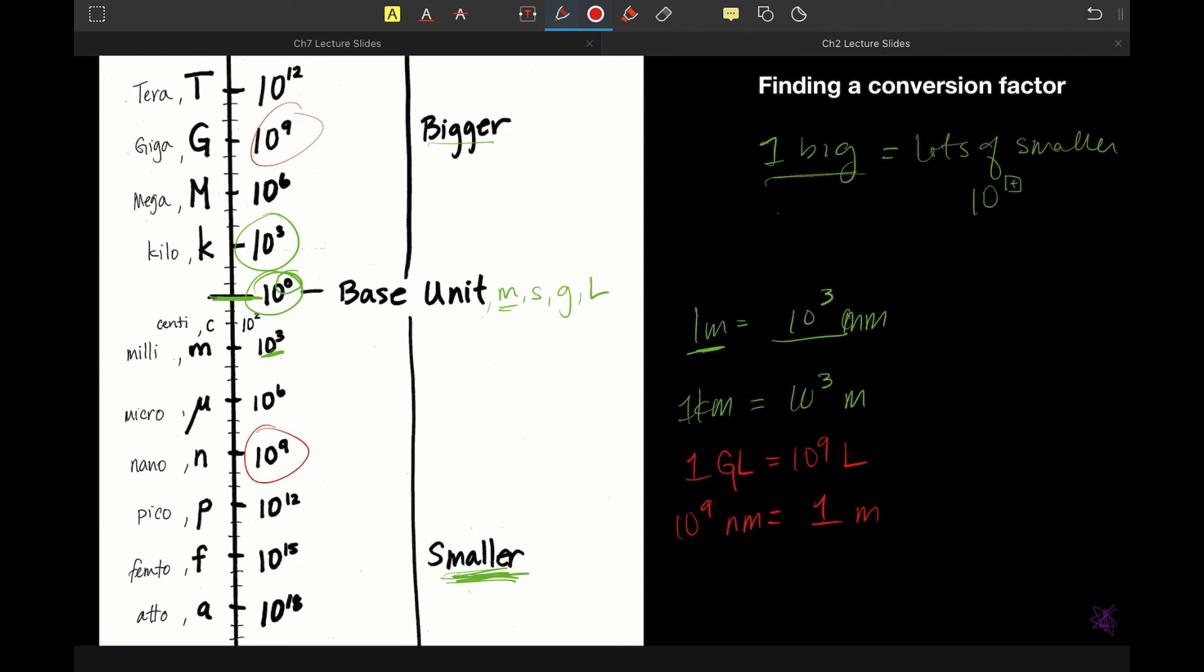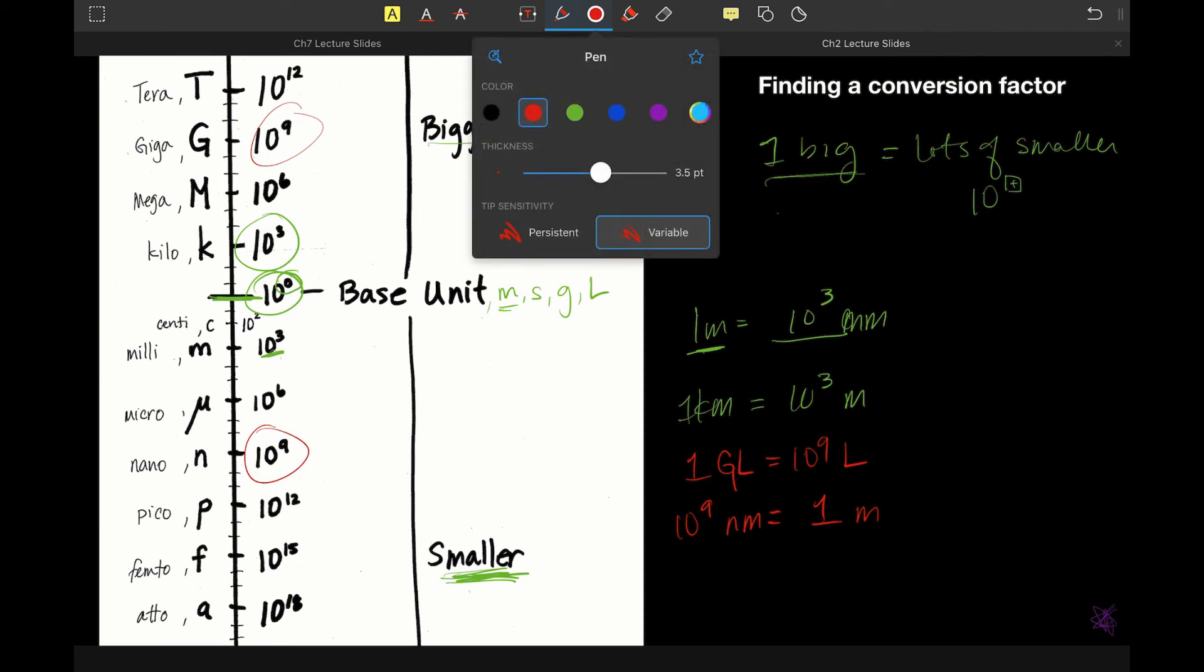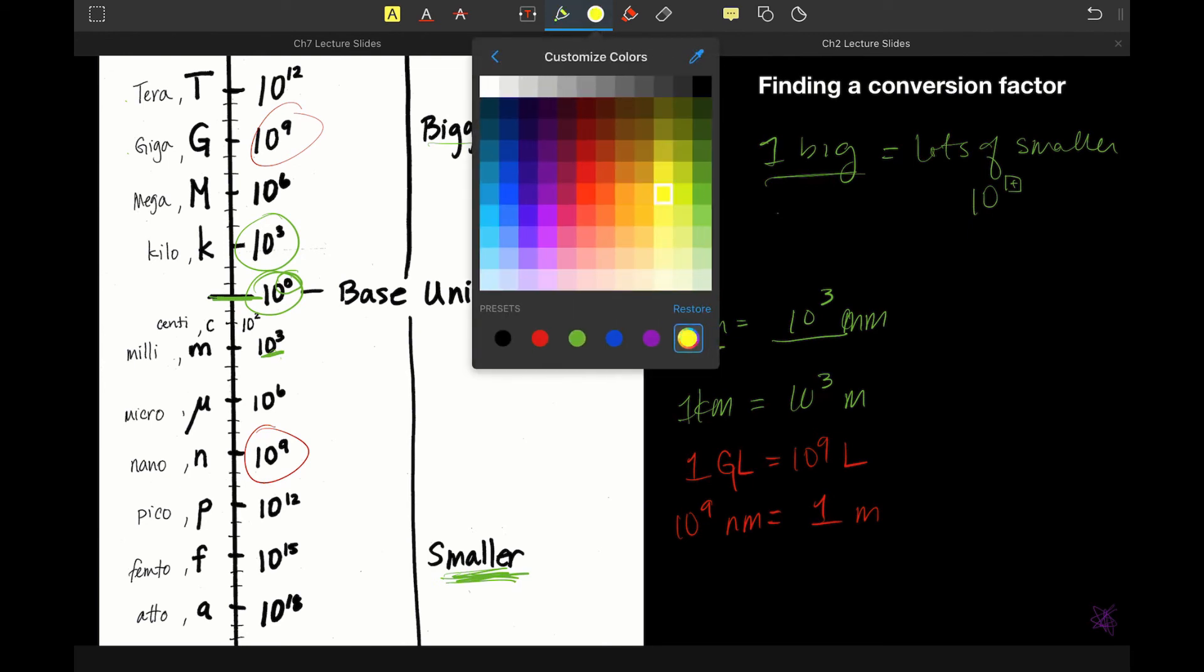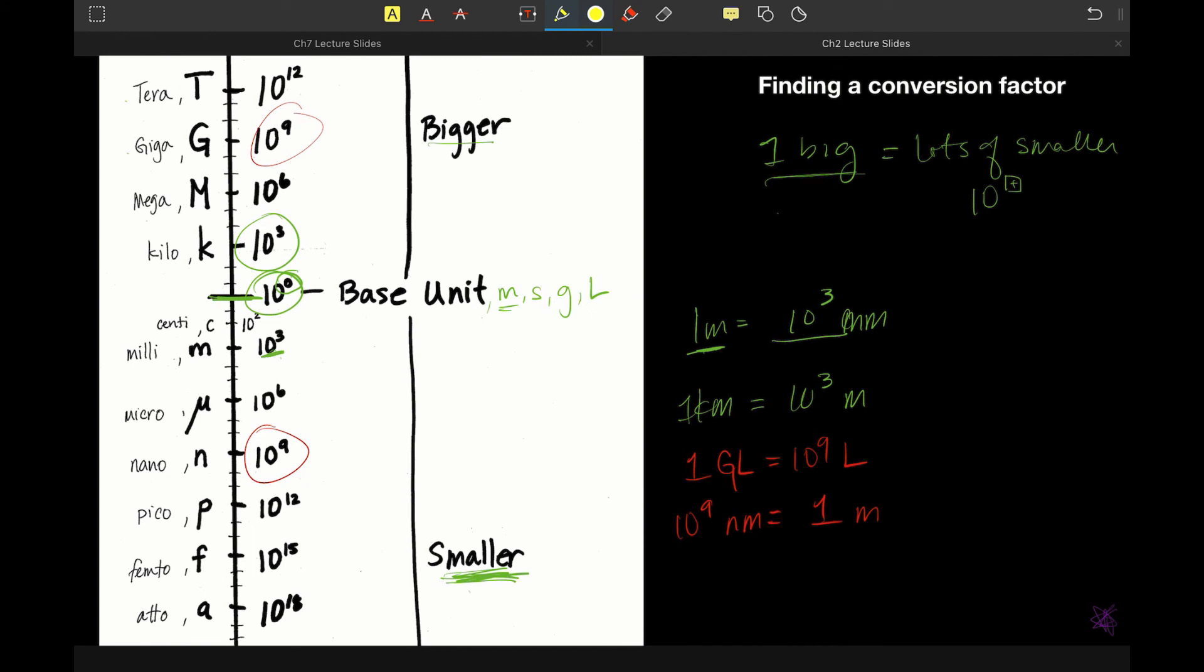Now let's say we wanted to go across that base unit. There are lots of ways to do it. This is the way that I think is most logical to me. So this is what I would do. So let's say I wanted to go from kilometers to millimeters. I would see that kilo is 10 to the three bigger. Millie is 10 to the three smaller. So that means I have to go three places to get to the base unit, three more places to get to Millie, which means a total of 10 to the sixth is the relationship there.